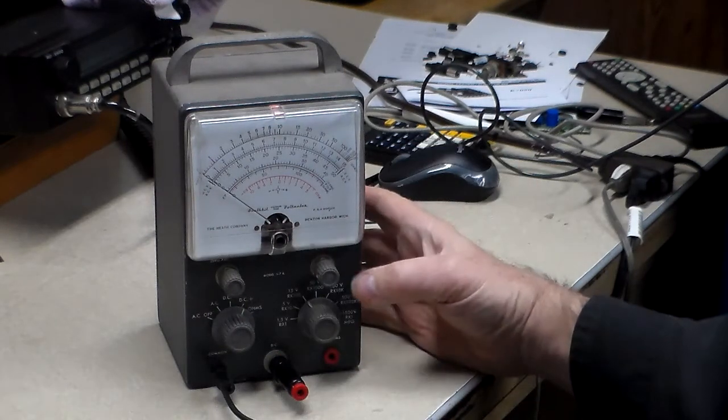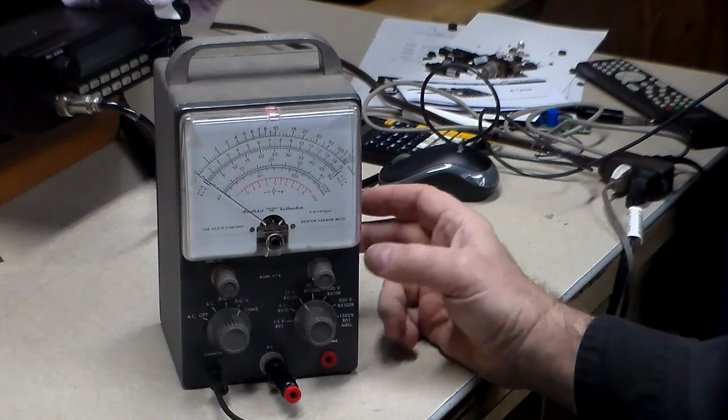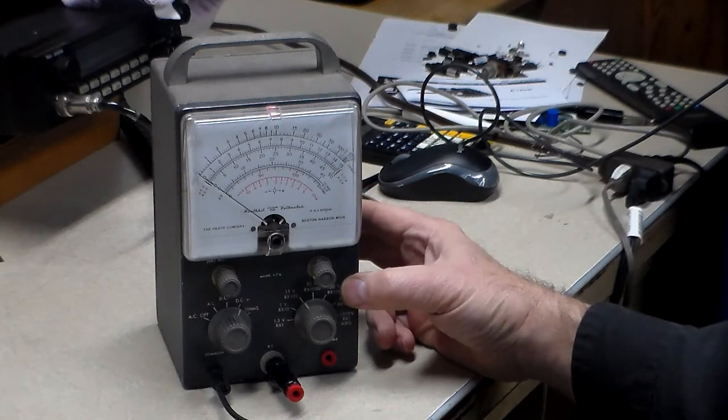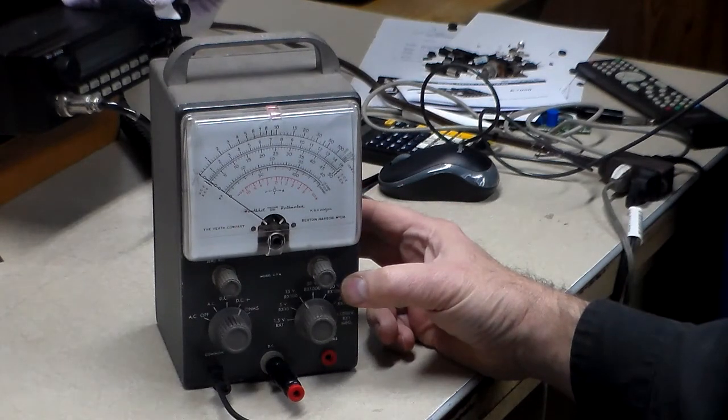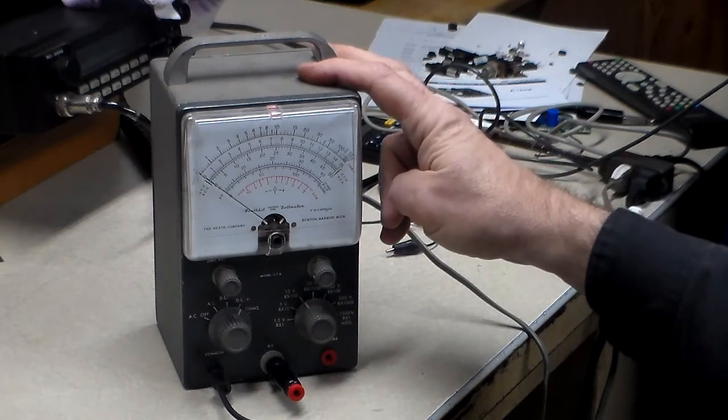And then I can use this too. I have a couple - I have an Eico also and another Heathkit that I don't use that often. I have to actually go through that one. But this one's all been redone and I've used this a couple of times.